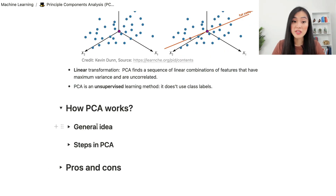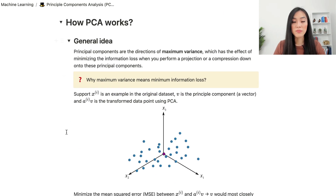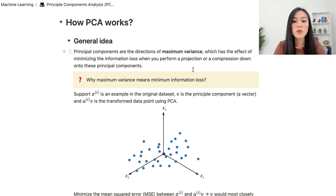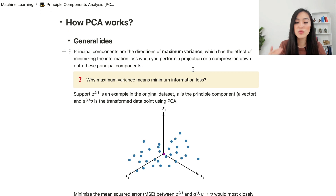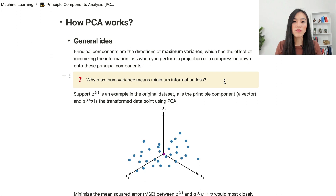We'll first look at the general idea of PCA and then dive into the algorithm step by step. The general idea of PCA is to find principal components — the directions of maximum variance — which minimizes the information loss when you perform a projection or compression down onto these principal components. Why does maximum variance mean minimum information loss?